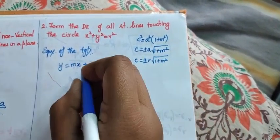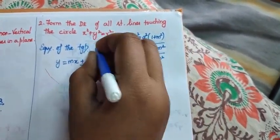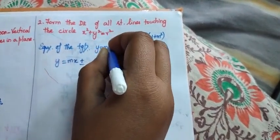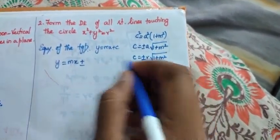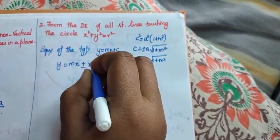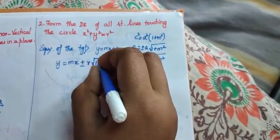So, the equation of the tangent is y equals m x plus c. Instead of c, substitute here plus or minus r root of 1 plus m squared.